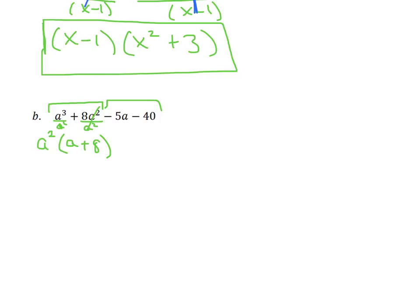Now we need to do something special. When our second grouping starts with a negative, we always factor out a negative GCF. I have negative 5a and negative 40, so I'm going to factor out a minus 5. I divide each term by negative 5: negative 5a divided by negative 5 is a positive a, and negative 40 divided by negative 5 is a positive 8. If I didn't factor out a negative 5, these are not going to match up.